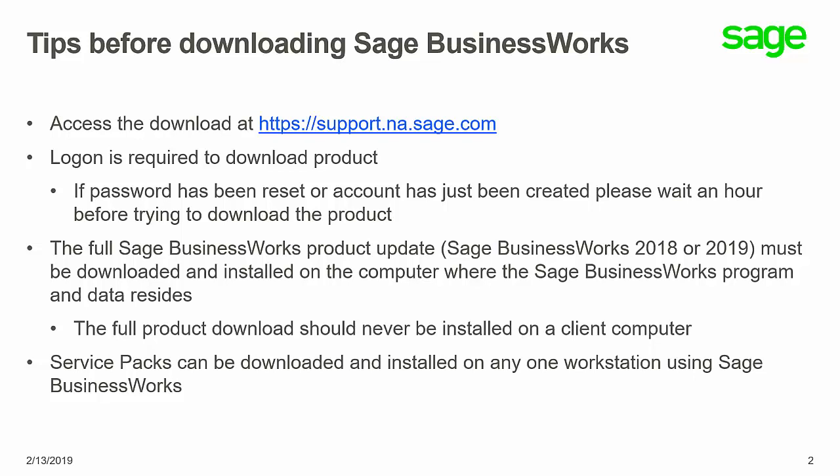The full Sage BusinessWorks product update — the ones that change the version number, such as going from 2018 to 2019 — must be downloaded and installed on the computer where the Sage BusinessWorks program and data resides. The full product download should never be installed on a client computer. Service packs can be downloaded and installed on any workstation that uses Sage BusinessWorks.